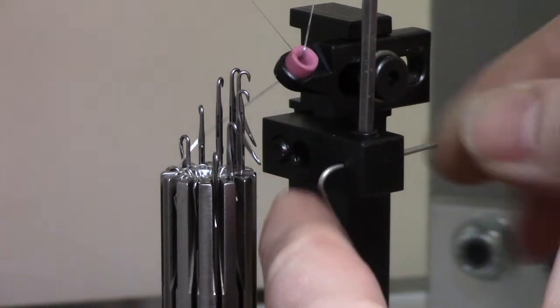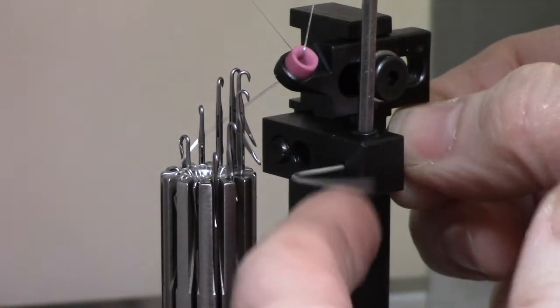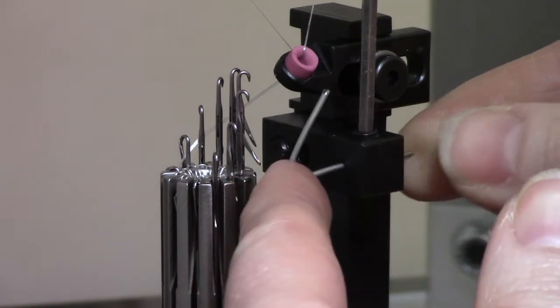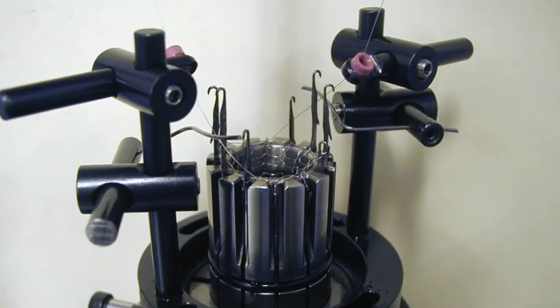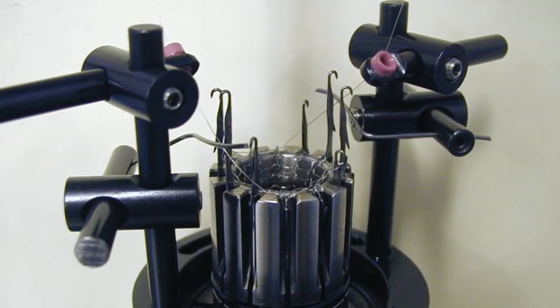With the set screw loose, the latch guard can be adjusted in and out and rotationally. Some latch guard assemblies are on a post and have a height adjustment as well as the in and out and rotational adjustments.